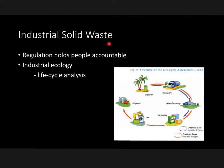Moving on to industrial solid waste — think of it as waste coming from industry. Regulations hold people accountable; if you put a regulation on a corporation, that corporation is much more likely to follow certain rules and restrictions. Industrial ecology seeks to redesign industrial systems to reduce resource impacts and maximize both physical and economic efficiencies. For example, there's something known as a life cycle analysis, which is used to track a product from its raw materials to its disposal.